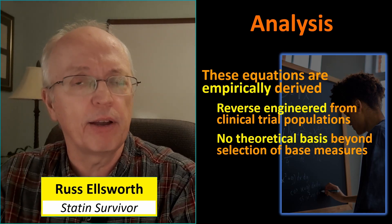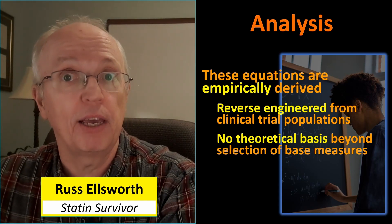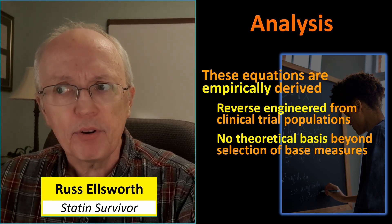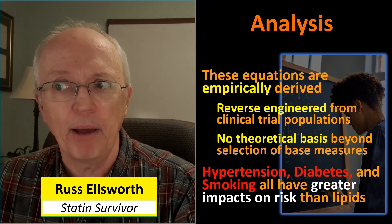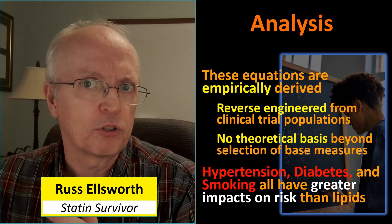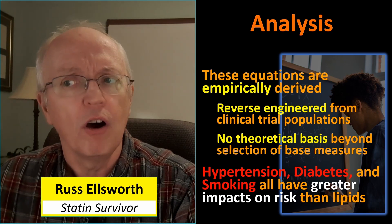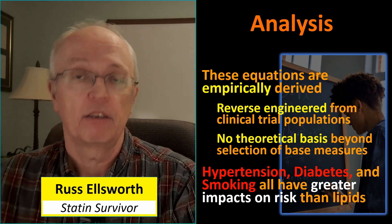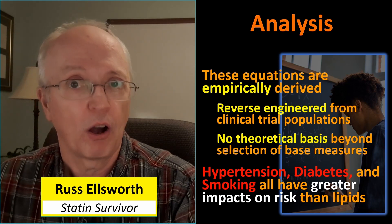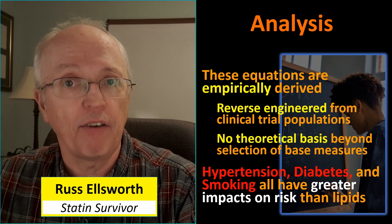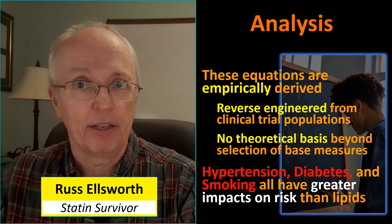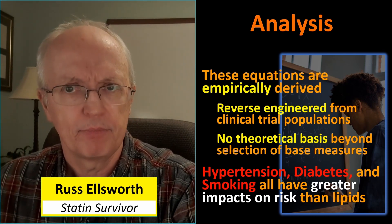What they did was look at thousands of data points to see what factors lead to cardiovascular events and how much to weight them. Hypertension, diabetes, and smoking all have greater impacts on risk than lipids. In fact, having diabetes doubles your risk. Playing with the calculator, when I gave myself diabetes, there was nothing I could do to my lipid panel, according to the calculator, to get my risk value back down to where it was with my normal lipid panel and no diabetes.